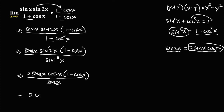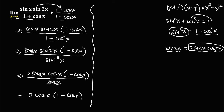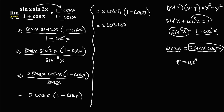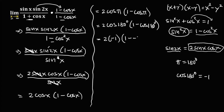This simplifies to 2 cosine(x) times 1 minus cosine(x). Now we can substitute x = pi. So we have 2 times cosine(pi) times 1 minus cosine(pi). Since pi equals 180 degrees, this becomes 2 times cosine(180°) times 1 minus cosine(180°). Since cosine(180°) equals negative 1, we get 2 times negative 1, times 1 minus negative 1.